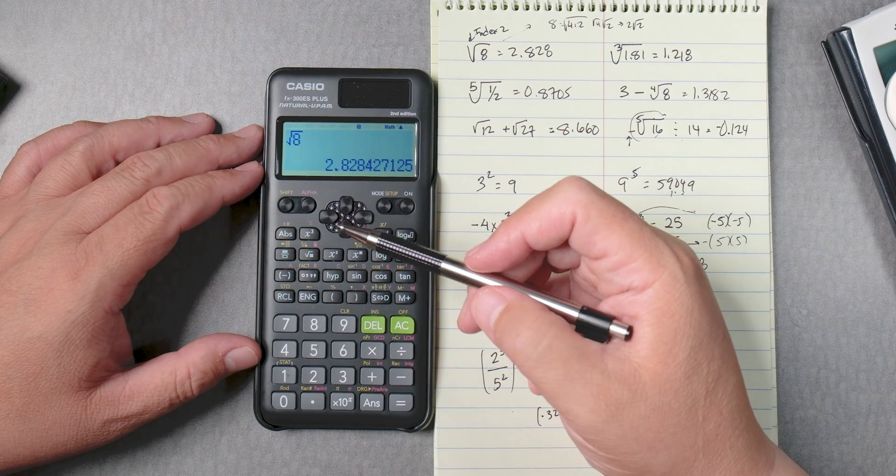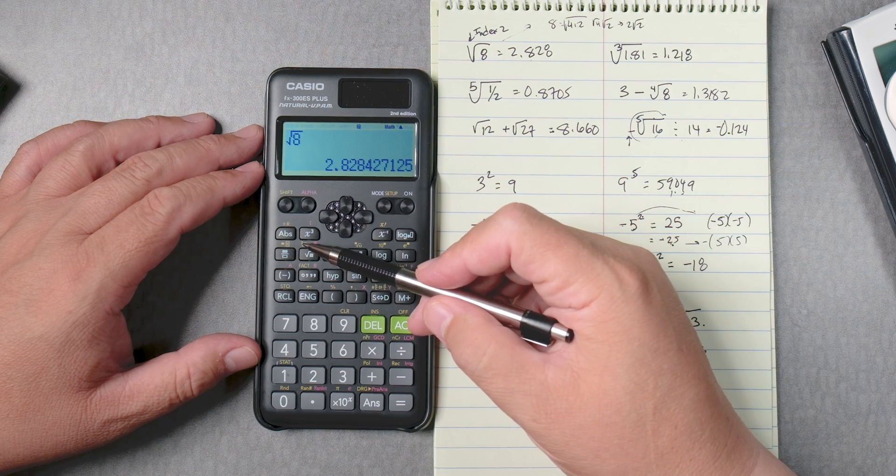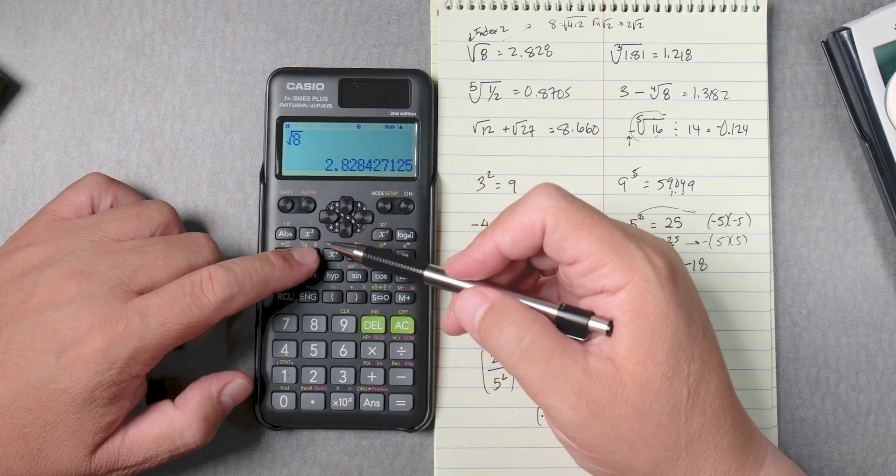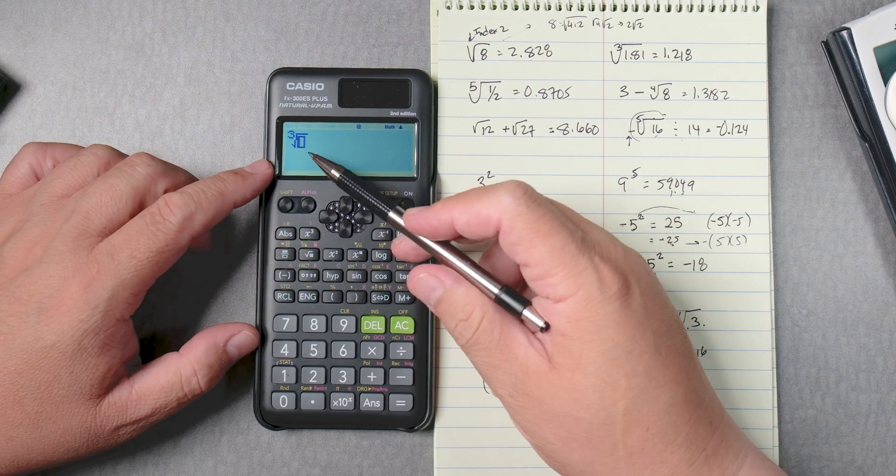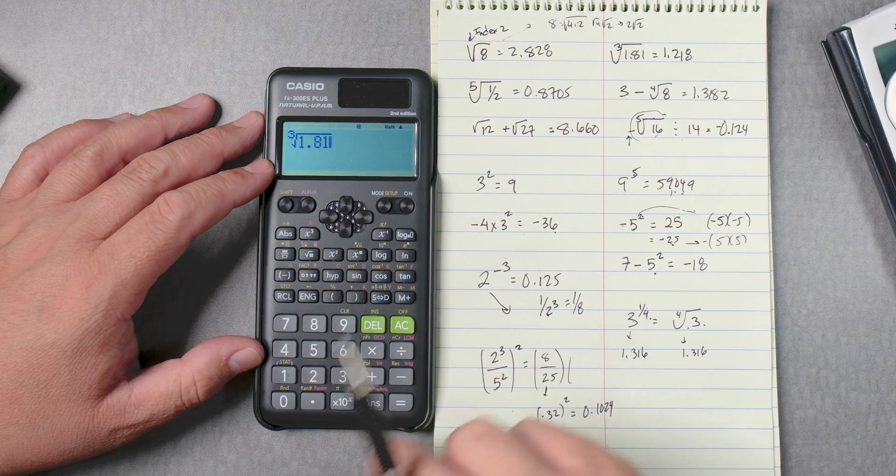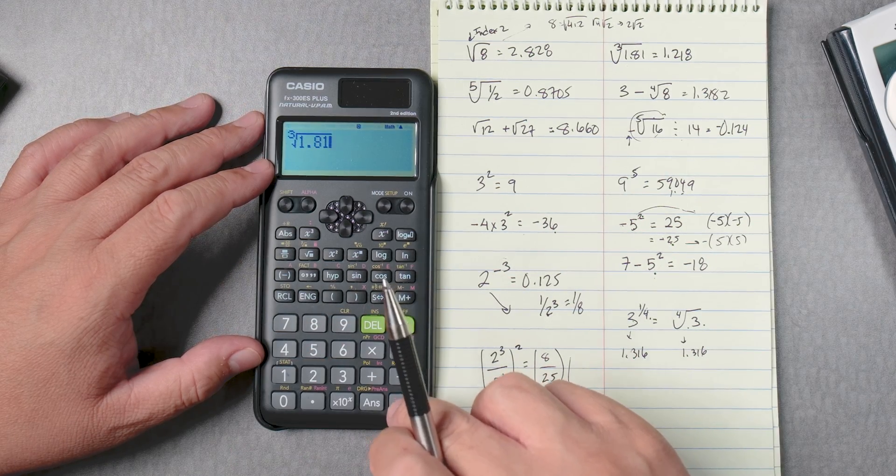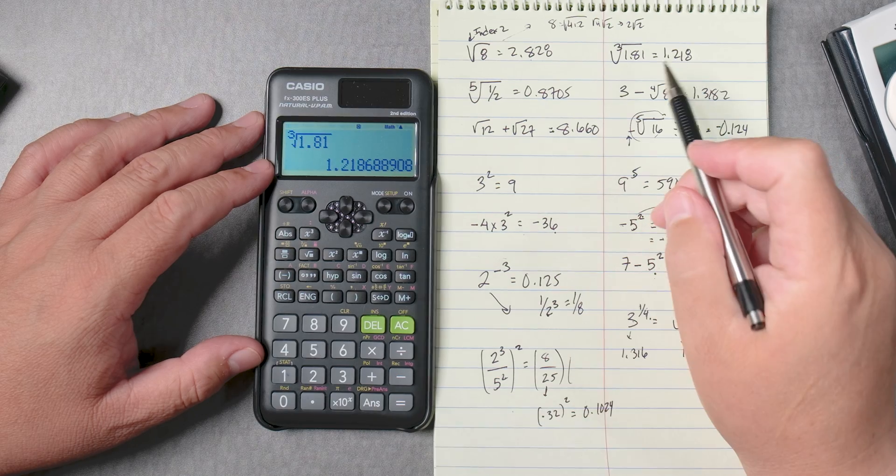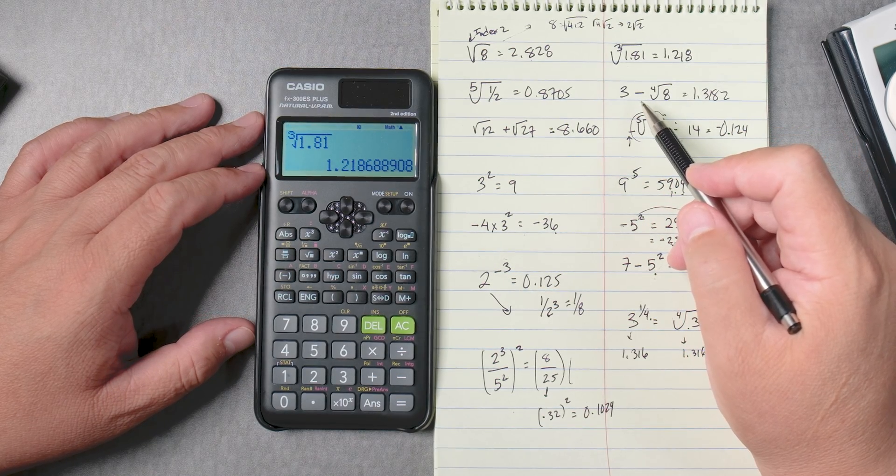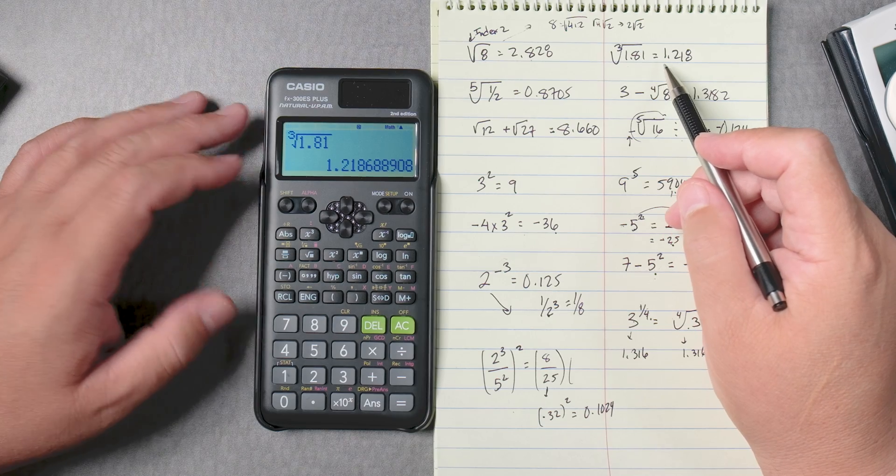So that one, you have a third root key right here. So you press shift for yellow keys, third root of what? 1.81, and you press equals and it gives you 1.218. So that's one way of doing it.